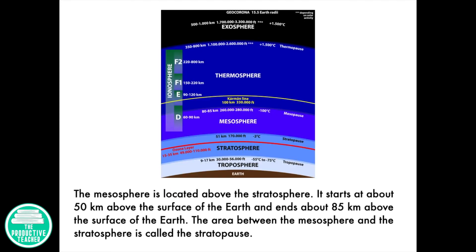The mesosphere is located above the stratosphere. It starts at about 50 kilometers above the surface of the Earth and ends about 85 kilometers above the surface of the Earth. The area between the mesosphere and the stratosphere is called the stratopause.